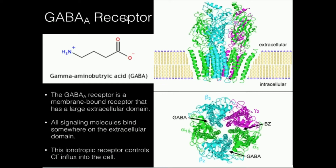So what does the GABA-A receptor do? First of all, it binds GABA. GABA is an acronym for gamma-aminobutyric acid — that's a neurotransmitter shown here with its structure. GABA is widely known as the most important primary central nervous system inhibitory neurotransmitter. Whenever GABA binds to its binding site on the receptor, the GABA-A receptor has a channel that opens and allows a chloride ion to move through.